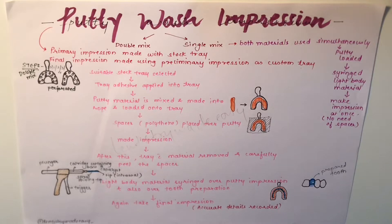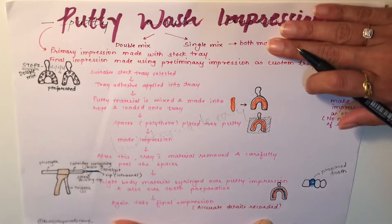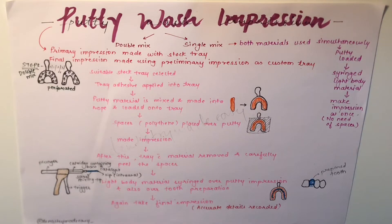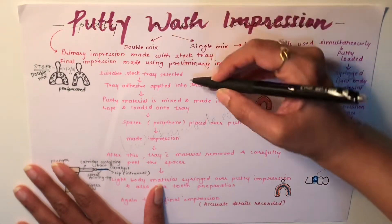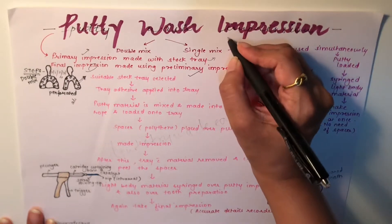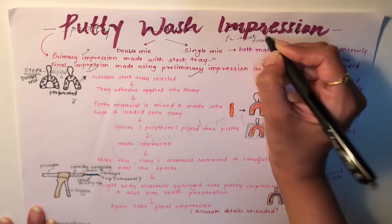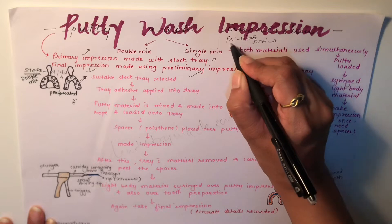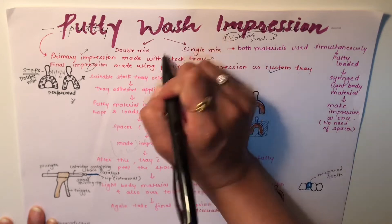Now starting with the main topic — putty wash impression — this is one of the impression making techniques in fixed partial denture. In this technique, you make a primary impression with the help of a stock tray, which is readily available in the market in various sizes depending on jaw size. The primary impression uses the stock tray, and the final impression uses that primary impression in the form of a custom tray.